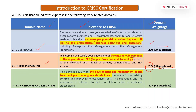Domain three is Risk Response and Reporting, which has more weightage. It mainly focuses on what the risk response will be after you identify the risk and how reporting will be done. It deals with the development and management of risk treatment plans among key stakeholders — internal and external, including vendors and regulatory bodies. The weightage for this domain is around 32%, which is 48 questions.